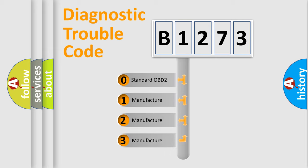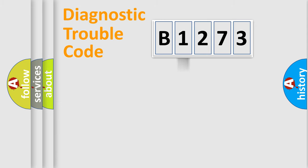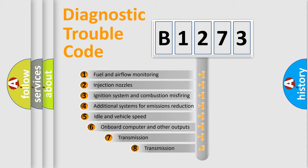If the second character is expressed as zero, it is a standardized error. In the case of numbers 1, 2, or 3, it is a more specific expression of the car-specific error.